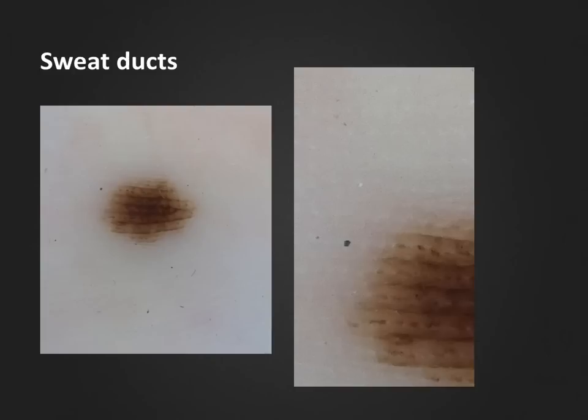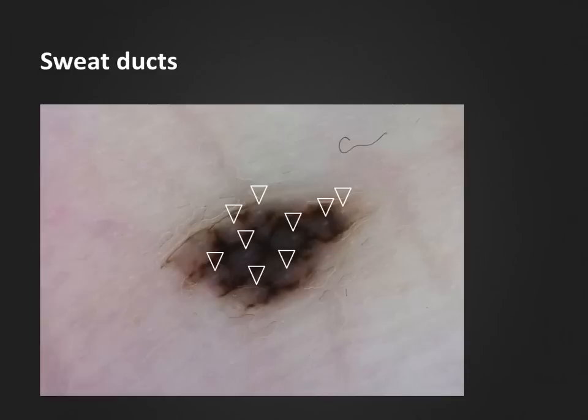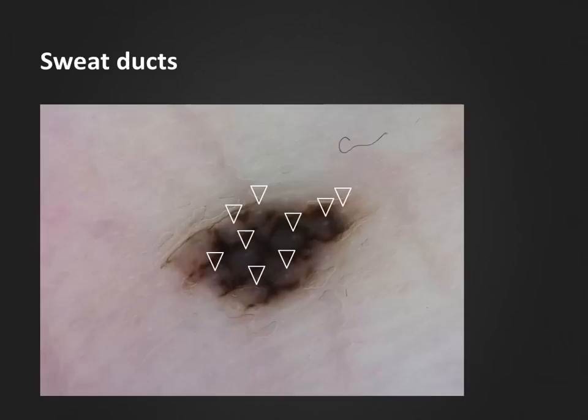We can also find white structures in the normal skin of the palms and soles. Upon dermoscopy of acral skin, we can see the typical furrows and ridges. If we look carefully, we can see hundreds of tiny white dots evenly distributed along the ridges. These white dots correspond to the openings of the eccrine sweat ducts. When examining acral nevi, locating the healthy sweat ducts — as shown here by the arrowheads — can be very helpful. It may allow us to recognize this variation of the benign parallel furrow pattern, known as the lattice-like pattern.